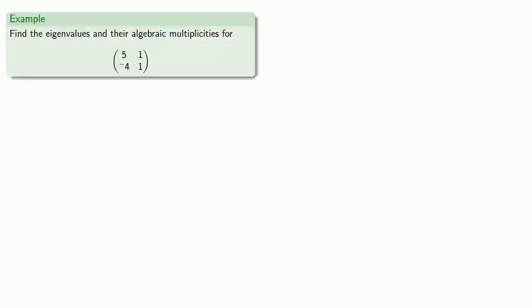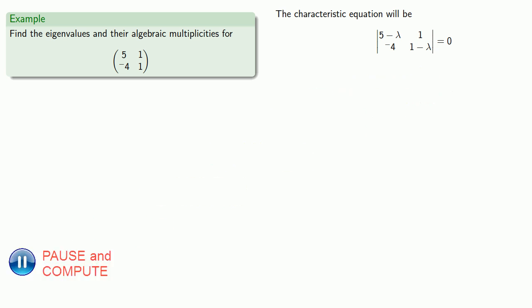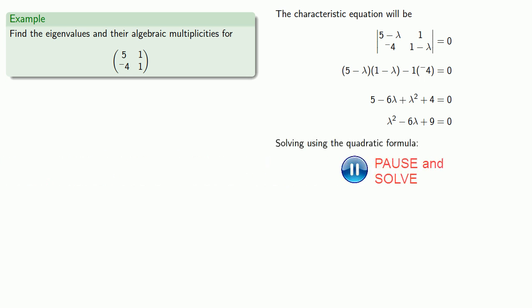For example, let's say we want to find the eigenvalues and the algebraic multiplicities for the matrix [5, 1, -4, 1]. Setting up our characteristic equation — the determinant of A minus lambda I equal to 0 — gives us lambda squared minus 6 lambda plus 9 equals 0. We'll solve this using the quadratic formula and get our solutions 3 or 3.